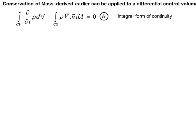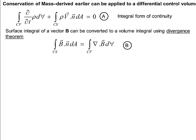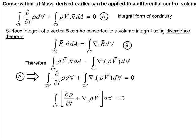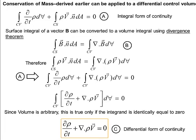Consider integral form of continuity equation we have derived in video 43. Let it be equation A. By converting surface integral to a volume integral and using divergence theorem along with some mathematical manipulations, we get equation C, which is called the differential form of continuity.